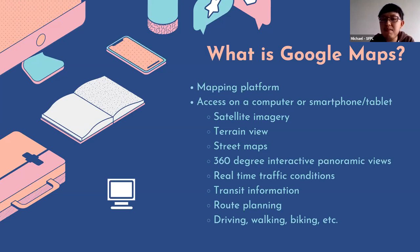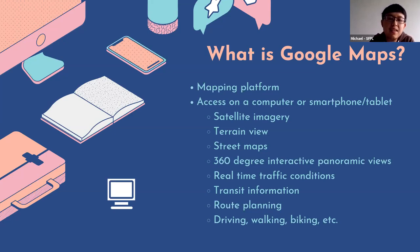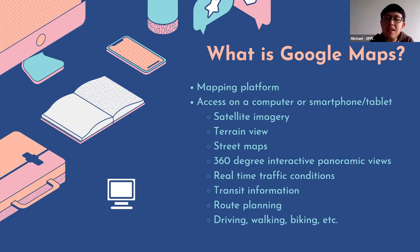On Google Maps you can view satellite imagery, terrain view, and street maps for certain locations. You might see 360-degree interactive panoramic views, real-time traffic conditions, and transit information. You need an active internet connection, so if you're using a smartphone or tablet, you need Wi-Fi or data on your device.